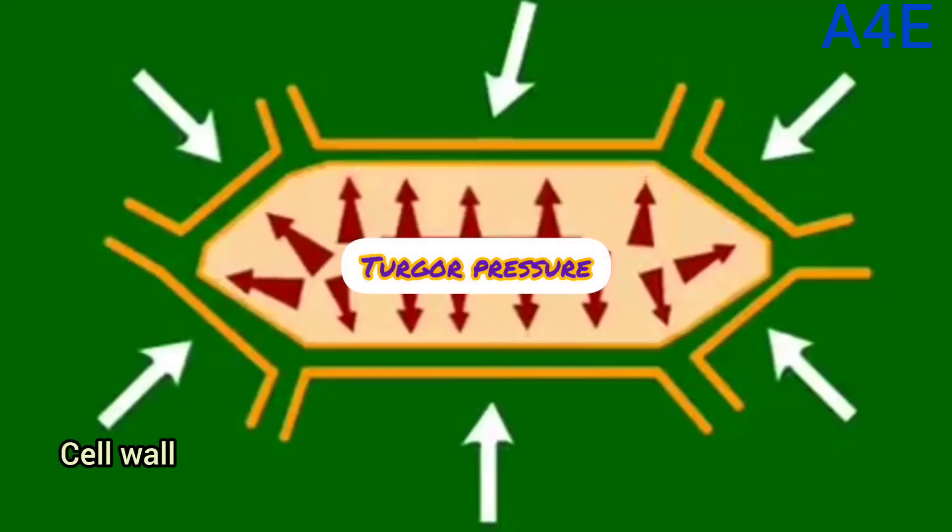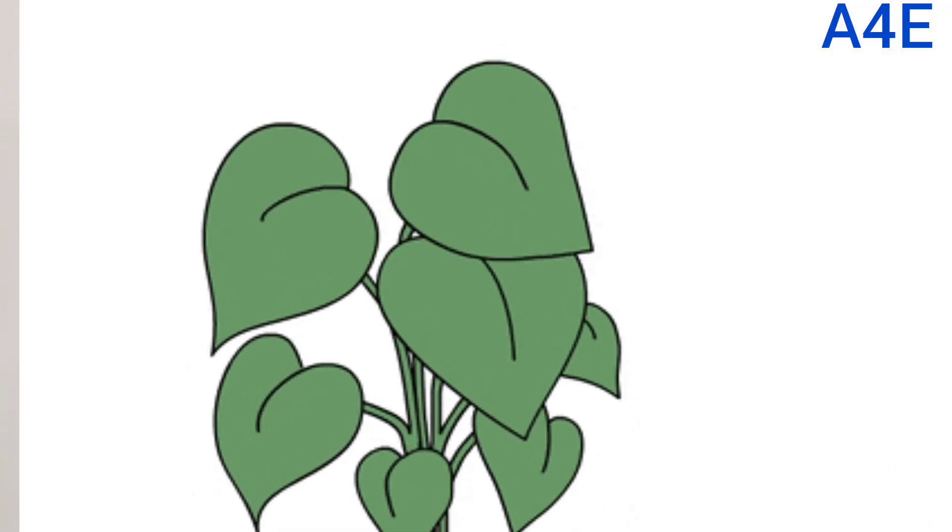If the cell wall has turgor pressure, the cell is stiff. Because of the turgor pressure, its leaves are stiff. Now, if the cell has a loose fluid, and the fluid is completely loose, the turgor pressure is zero. If the cell has a strong stiffness, it will be stiffer.